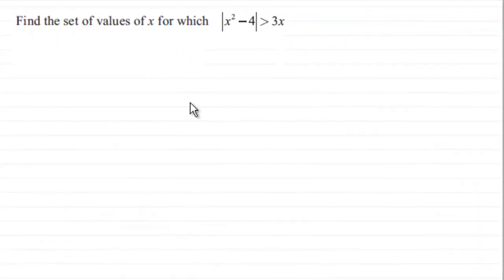Hi. Now what we have here is a question based on solving a modulus inequality. We've got to find the set of values of x for which the modulus of x squared minus 4 is greater than 3x. So if this is a question you'd like to do and haven't done so already, just give you a moment to pause the video, come back when ready and you can check your work solution with mine.